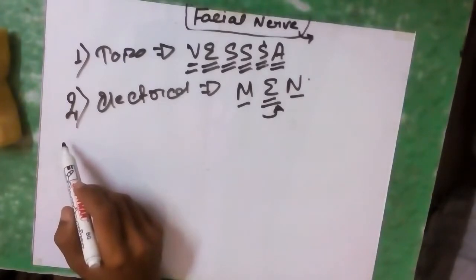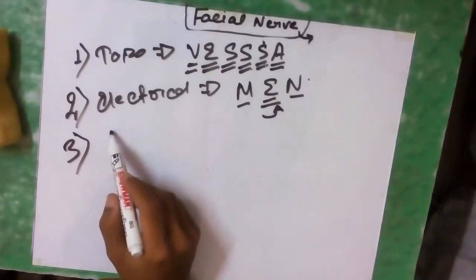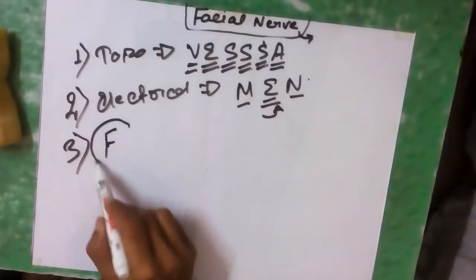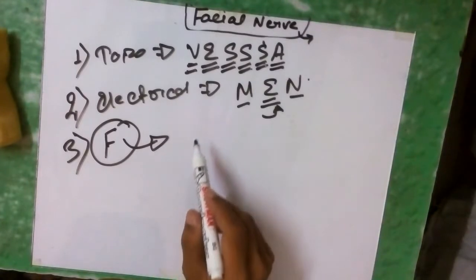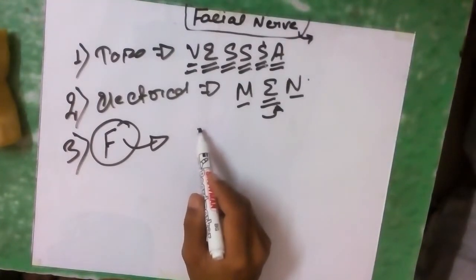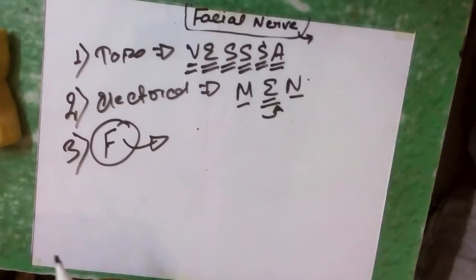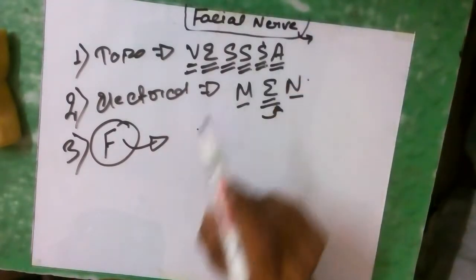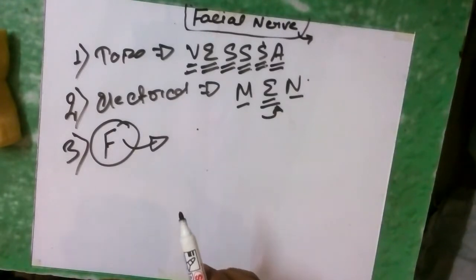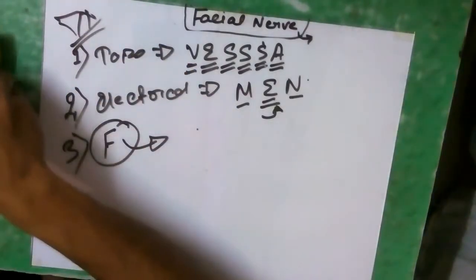The facial nerve stimulation test examines muscles supplied by the facial nerve: frontalis, orbicularis oculi, orbicularis oris, buccinator, and platysma. Regarding the Schirmer's test, it is usually decreased by more than 30% in patients with facial nerve injury, making it a significant diagnostic indicator.